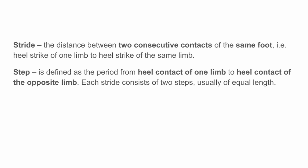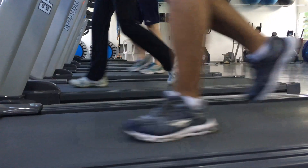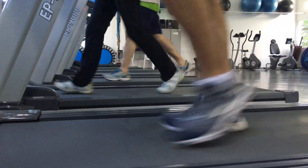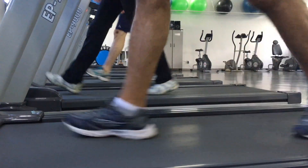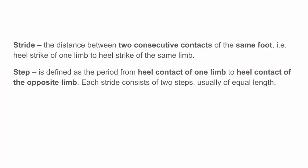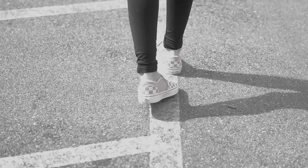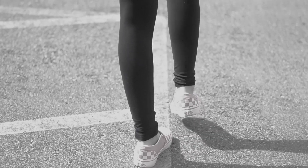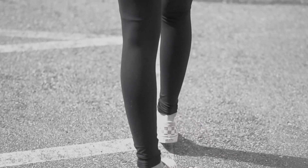Stride is the distance between two consecutive contacts of the same foot — for example, heel strike of one limb to heel strike of the same limb. Step is defined as the period from heel contact of one limb to the heel contact of the opposite limb. Each stride consists of two steps, usually of equal length.